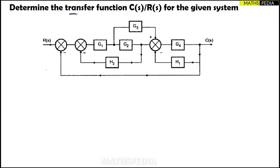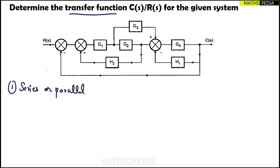Hey guys, welcome back. In this video we'll be solving the transfer function — we have to find C(s)/R(s) using the block diagram reduction method. Here they have given this diagram. The first step is to check for any series or parallel combinations. In this diagram we are not getting any series or parallel combination directly.